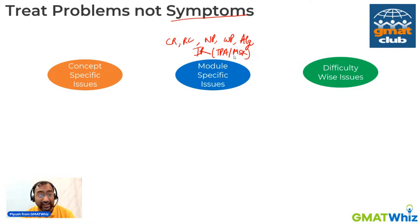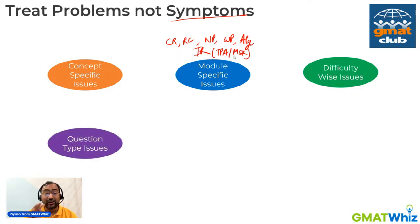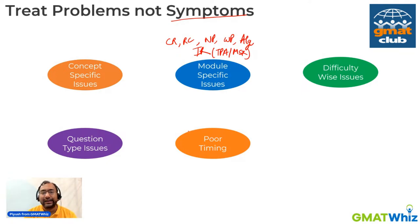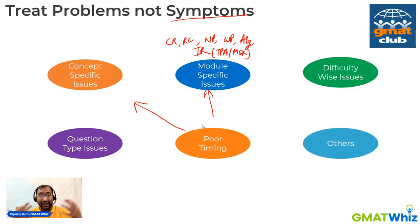There could also be issues with certain difficulty types — you might have trouble only with the hardest questions. You also need to look at question types you're getting wrong: sometimes people have issues with data sufficiency questions or MSR questions. Poor timing is generally not the main reason — it's usually caused by one of these underlying factors: conceptual gaps or process gaps. And there's one more reason — thinking about timing too soon. Over the last 10 years, I've spoken with more than 10,000 students, so if you want to connect, feel free to reach out.